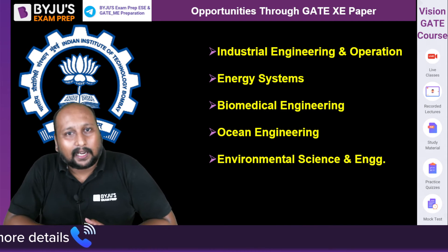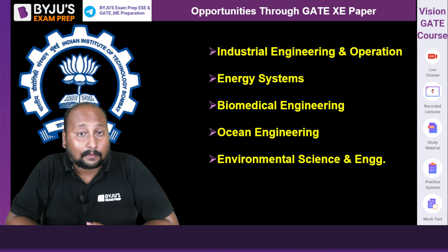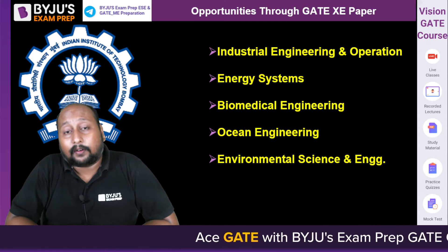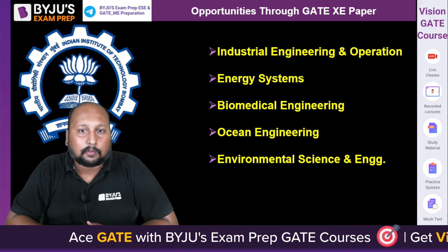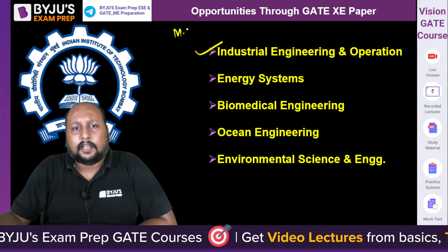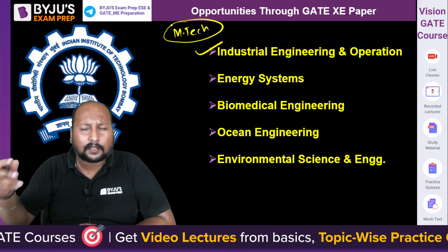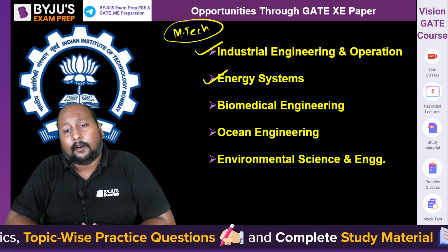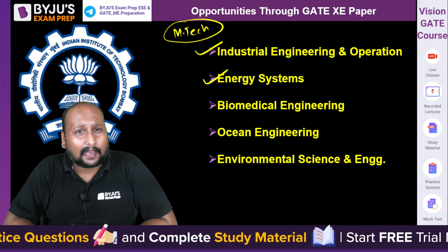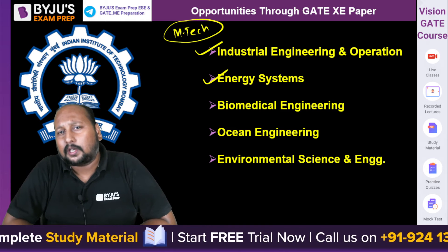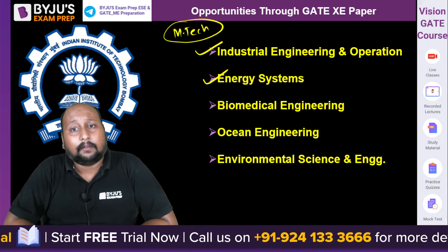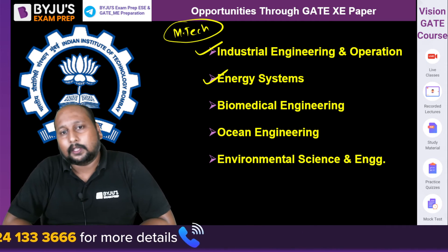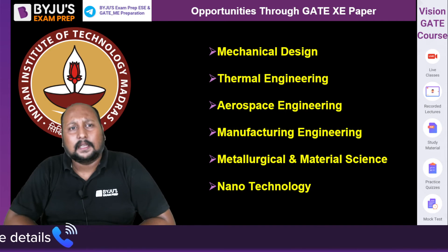The next prestigious IIT is IIT Bombay, which is strong from a placement perspective. IIT Bombay is offering master's programs in Industrial Engineering and Operations, Energy Systems, Biomedical Engineering, Ocean Engineering, and Environmental Science and Engineering. For mechanical students, Industrial Engineering and Operations and Energy Systems are the most relevant programs, and you can avail placement support from this program through GATE XC paper.